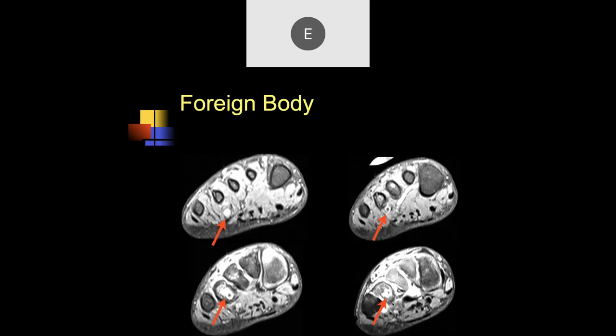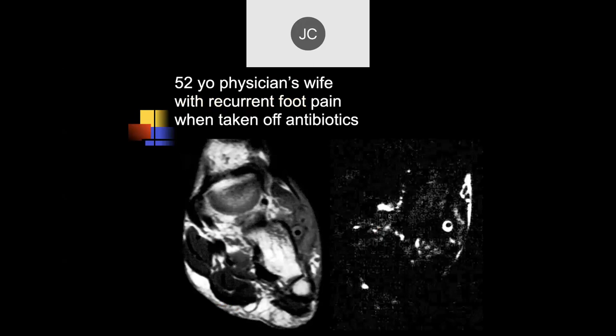This is a foreign body. She had actually stepped on a needle from a palm tree — during windstorms the fronds fall down and have about three-inch-long needles. She stepped on one that broke off. They kept giving antibiotics, but with a persistent foreign body the bacteria would just grow back. They finally went in, removed it, and cured her.